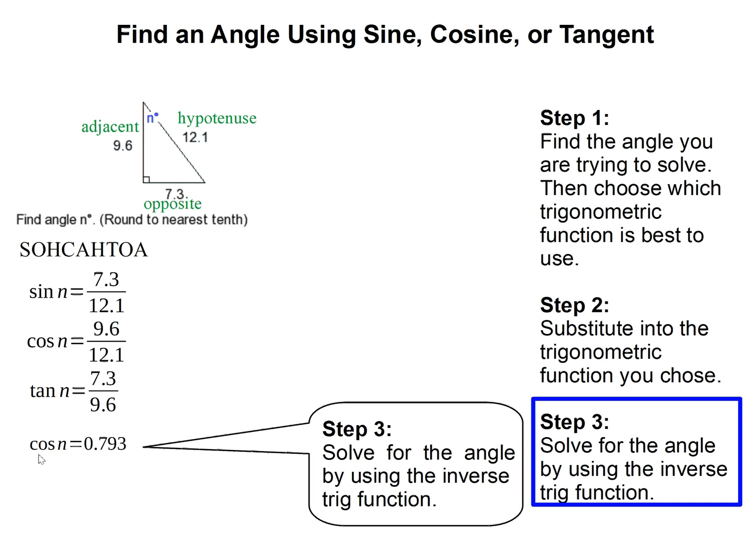Since we have cosine here, we need to do the opposite, so that's the inverse cosine. It's this symbol right here on your calculator. Depending on your calculator, you might have to put the angle first and then inverse cosine, or sometimes inverse cosine then the number. Make sure you try both ways. When you do that, it will give you the answer for n by itself.